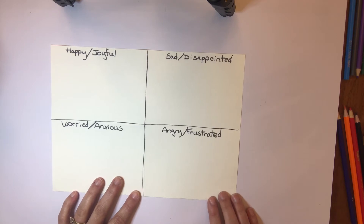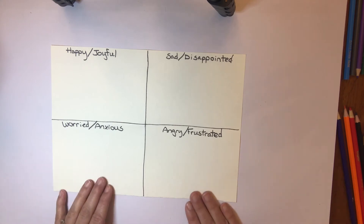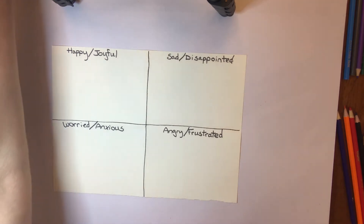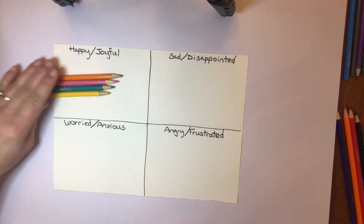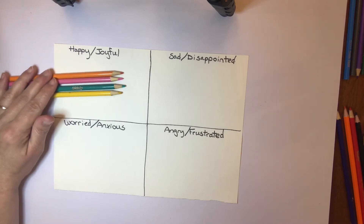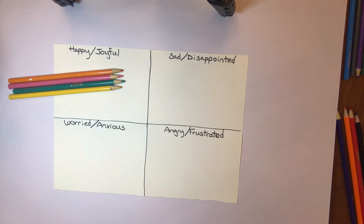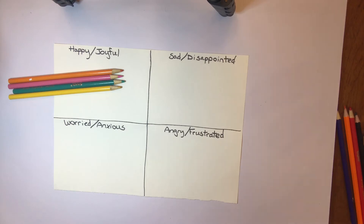Think about whichever emotion you're feeling today and take a look at your colored pencils. I'm going to pick out colors that feel happy and joyful — pick out some colors you feel are happy and joyful. My happy and joyful colors are orange, pink, a bright teal, green, and yellow. Then when you think about sad and disappointed, what colors might those be?